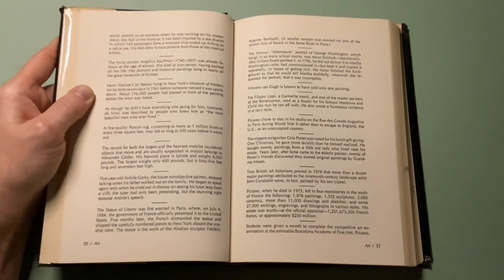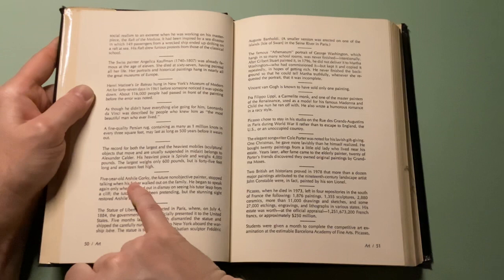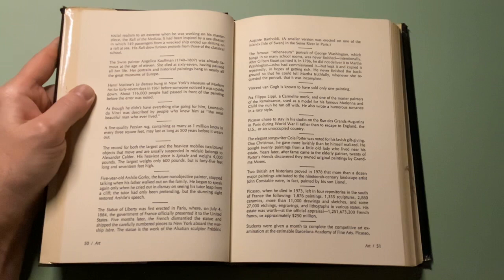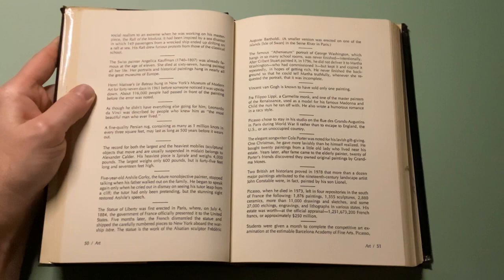Five-year-old Arshile Gorky, the future non-objective painter, stopped talking when his father walked out on the family. He began to speak again only when he cried out in dismay on seeing his tutor leap from a cliff. The tutor had only been pretending, but the stunning sight restored Arshile's speech.